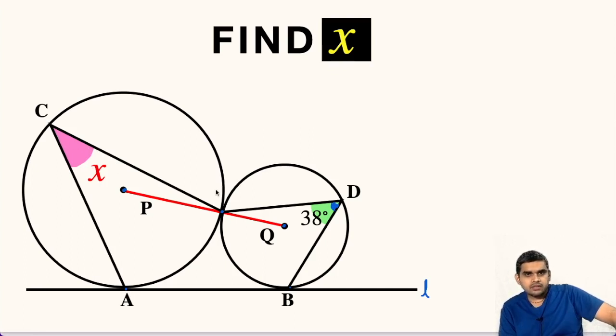In order to solve this question, we need to do some construction in the figure. So, the construction is to join points P and A, likewise points Q and B. PA will be perpendicular to AB and likewise QB will also be perpendicular to AB.